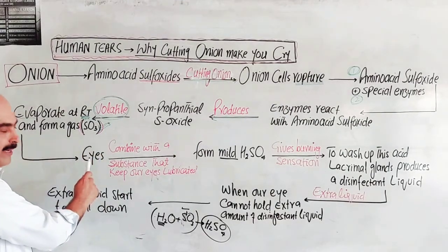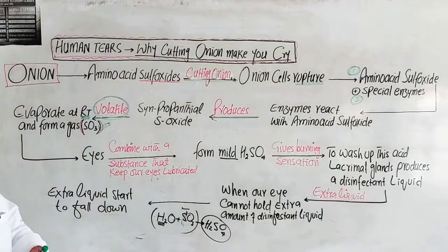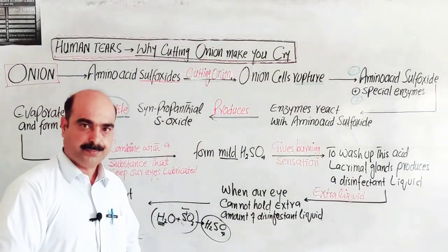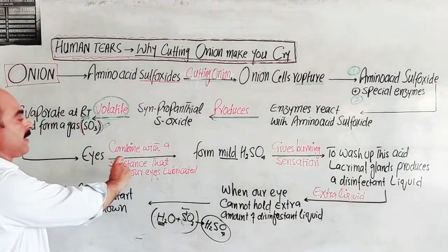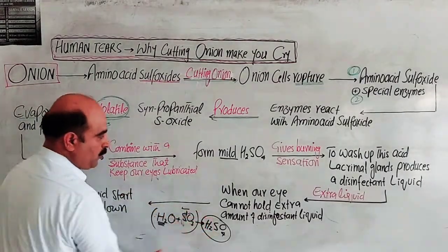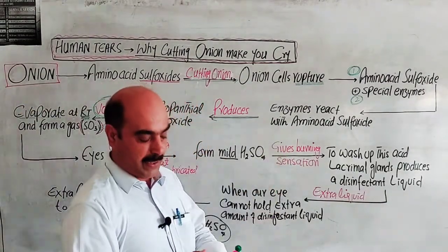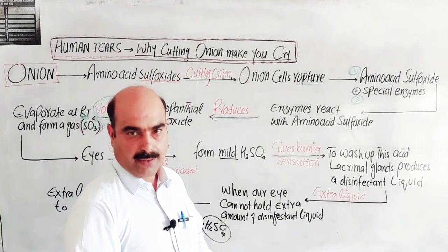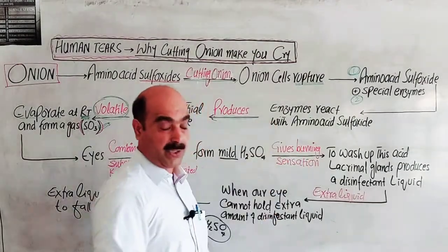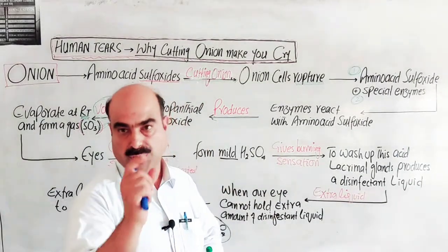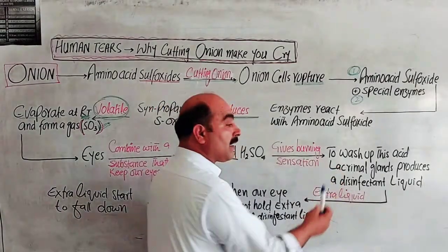Sulfur trioxide combines with the substance that keeps our eyes lubricated. The sulfur trioxide and this liquid combine to form mild H2SO4. This sulfuric acid is an acid, and acids give burning sensation in our eyes.